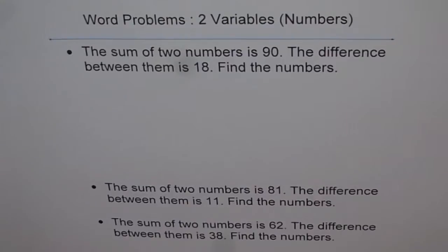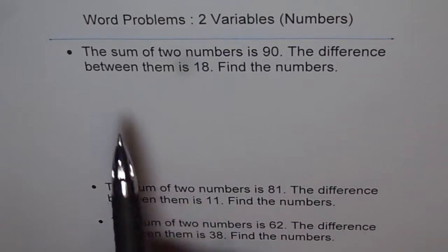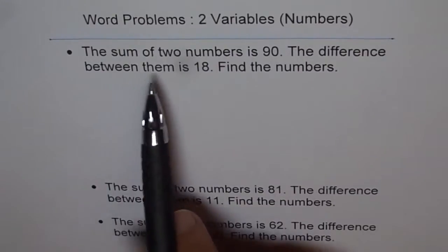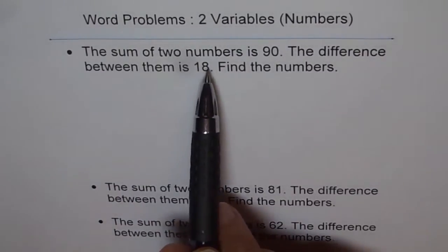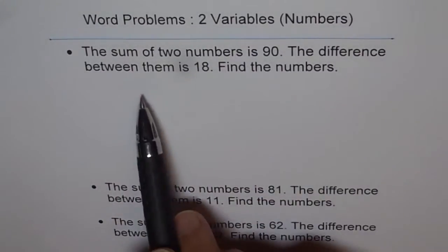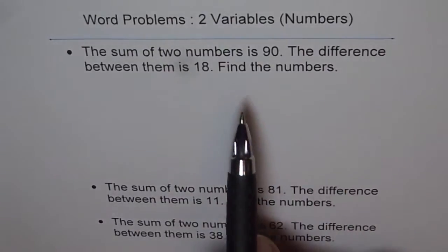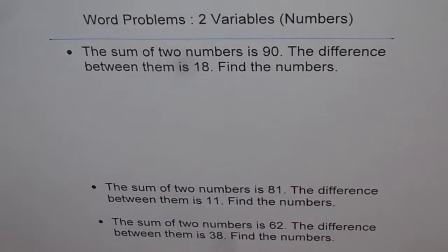Here is a very simple one for you. Let's follow the steps and do it in a nice way. The question is: the sum of two numbers is 90, the difference between them is 18. Find the numbers.